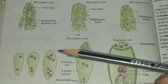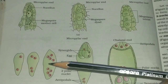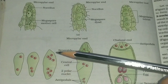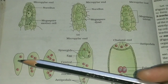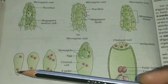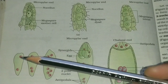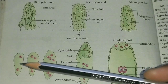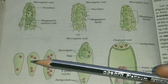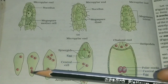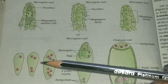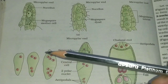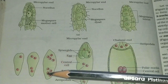The functional mega spore undergoes three mitotic divisions, resulting in the formation of an eight-nucleus structure. In the first mitotic division, one nucleus at each pole is formed — two nuclei total. These two nuclei undergo a second mitotic division, resulting in two nuclei at each pole — four total. These four nuclei then undergo a third mitotic division, resulting in an eight-nucleus structure, with four nuclei on each pole.